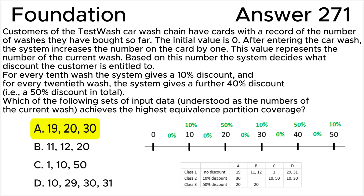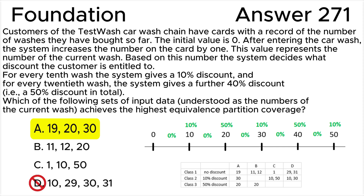Answer D is not correct. 29 and 31 cover the no discount partition, while 10 and 30 cover the 10% discount partition. The 50% discount partition is not covered. So overall, only two of the three valid equivalence partitions are covered.